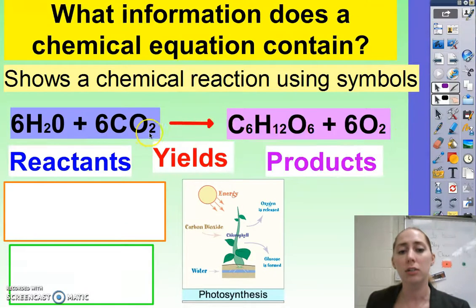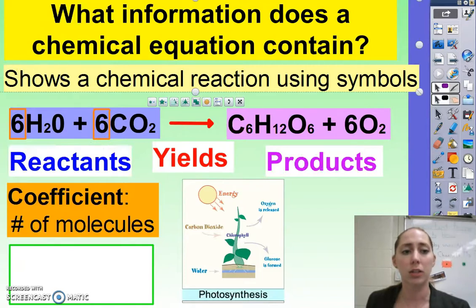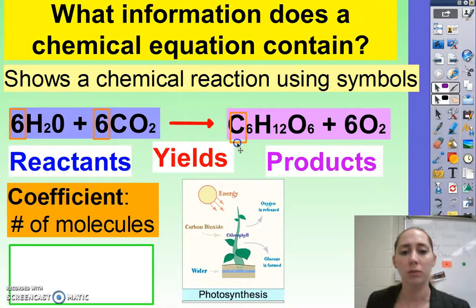Now we've got two different types of numbers in our chemical equation. The large number in front of the molecule is called our coefficient, and it tells us our number of molecules. So there are six water molecules, six carbon dioxide molecules, one glucose molecule - it's not written there, but it's implied - and six oxygen molecules.